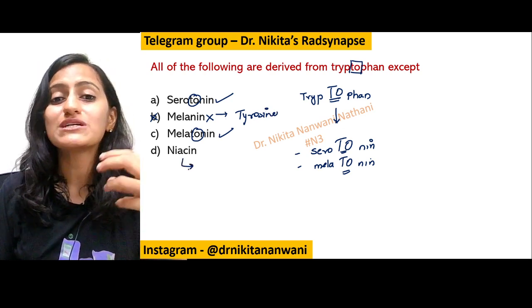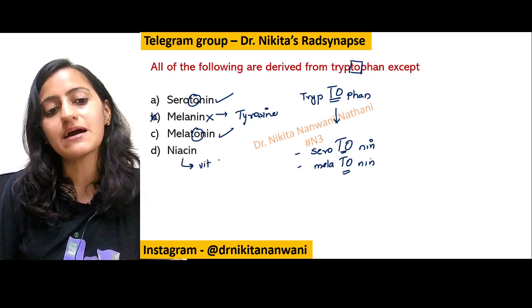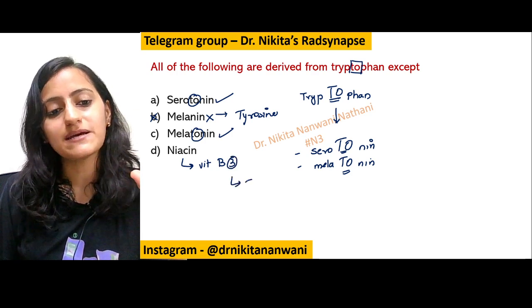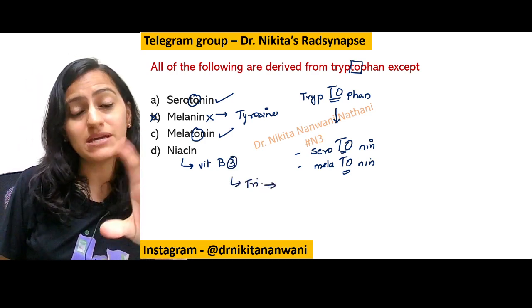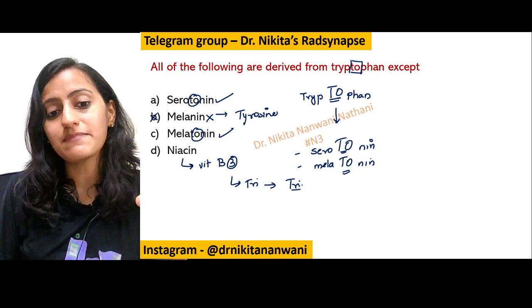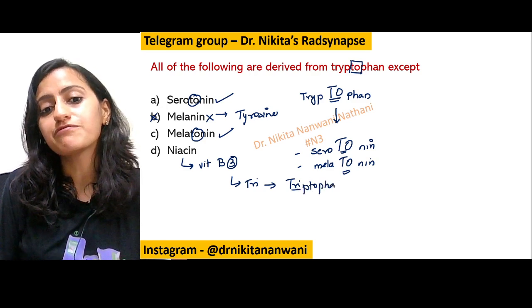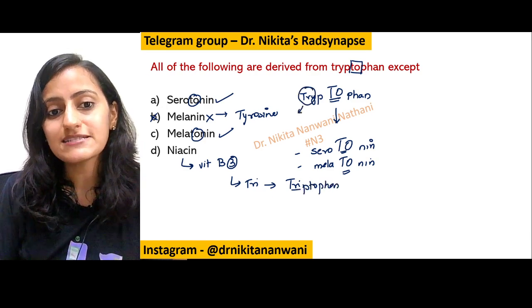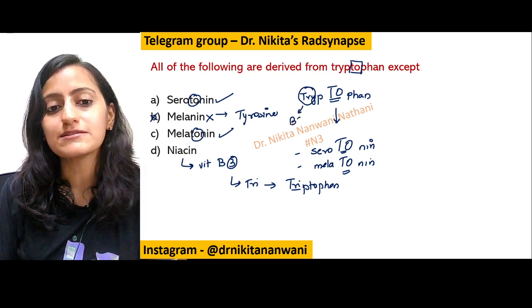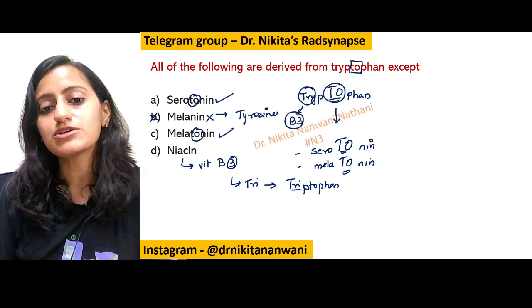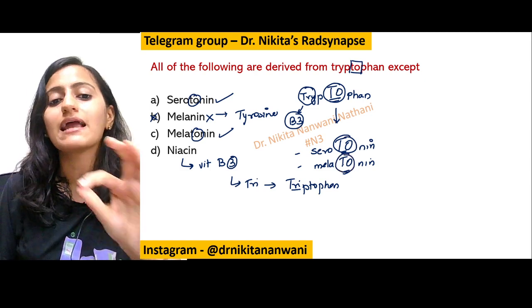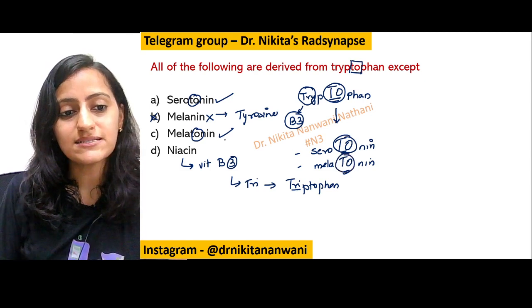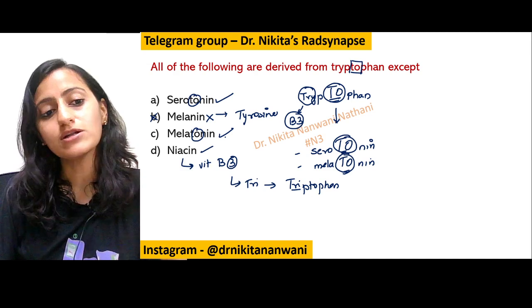Coming to the next option, niacin — that is vitamin B3. Remember, 3 basically means 'try', and that 'try' means tryptophan. So when I write tryptophan, the 'TRY' tells me it is vitamin B3, and the 'TO' tells me it is serotonin and melatonin — all derived from tryptophan.